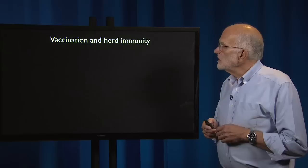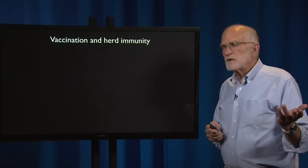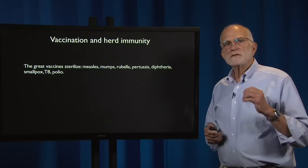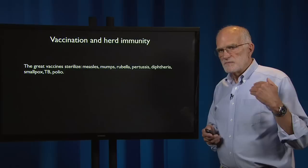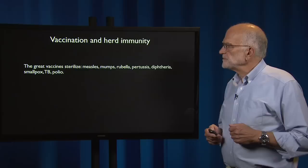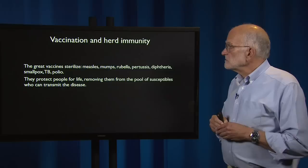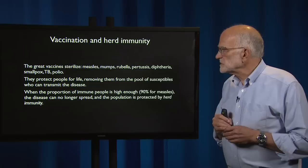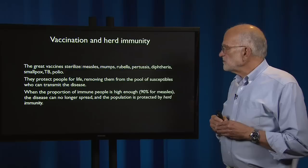We can see them quite well in the problem of vaccination and herd immunity. The great vaccines sterilize — measles, mumps, rubella, pertussis, diphtheria, smallpox, TB, polio — those are all vaccines that virtually sterilize the population and do not allow the pathogen to replicate in any vaccinated individual. They protect people for life and remove them from the pool of susceptibles who might be able to transmit the disease. When the proportion of immune people is high enough — that figure is about 90% for measles — the disease can no longer spread and the population is protected by herd immunity.